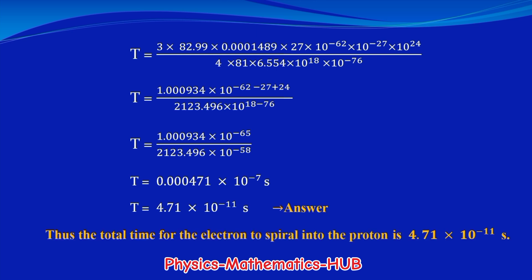Thus the total time for the electron to spiral into the proton is 4.71×10⁻¹¹ seconds — an incredibly short time. According to classical physics the hydrogen atom should collapse almost instantly. But we know that atoms exist and are stable. So what is missing?